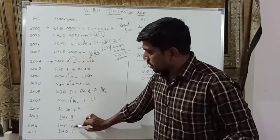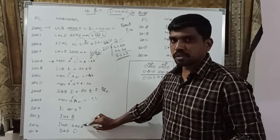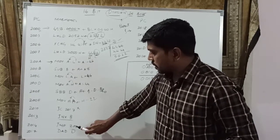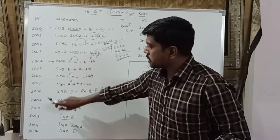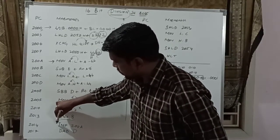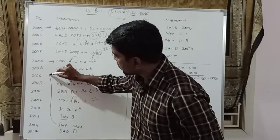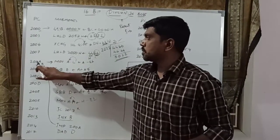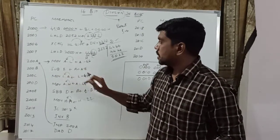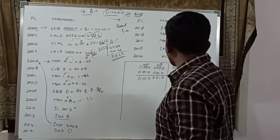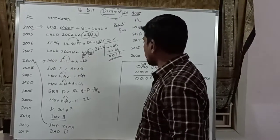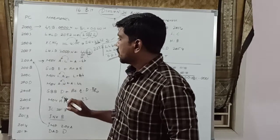JMP is a non-conditional branch instruction — it just jumps to the specified location. Whatever instruction is specified in the location, that location is loaded into the program counter. So after execution of this instruction, the program goes to memory location 200AH. The instruction there is MOV A, L. Whatever value is present in L register, this value is transferred to accumulator. L register value is 44H, so 44H is moved to accumulator.